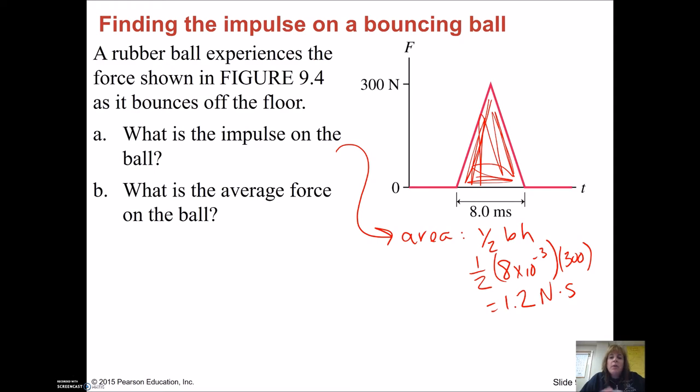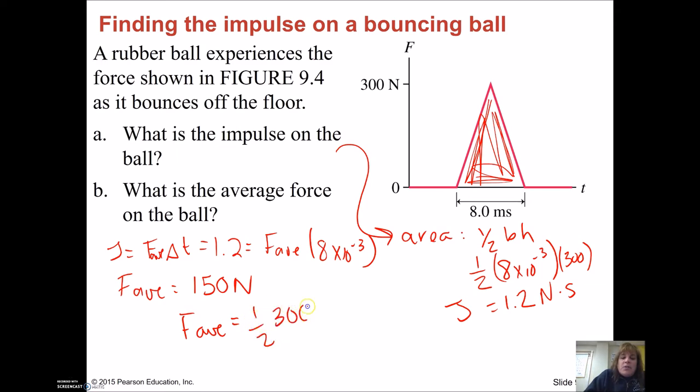Now, what is the average force on the ball? Well, there's two ways we could get that. If this is the impulse, and impulse is equal to force times time, or the average force times time, then 1.2 is equal to the average force times 8 milliseconds. So we could just do that math, and we would find out that our force average is 150 newtons. How else could you get that? Well, the average force is just an average of the force that went from zero to 300. So we could also do F average is the average here, which would be one half times 300, because this is nice and symmetrical, which again is 150 newtons.